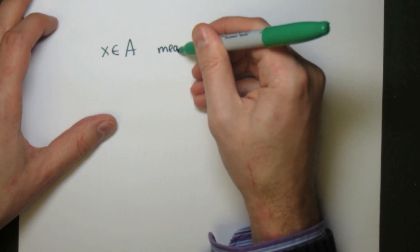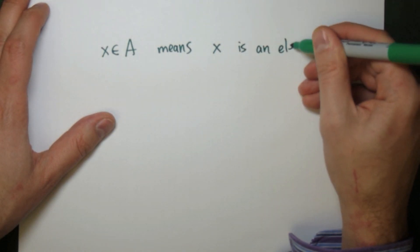We write x is an element of A using the Greek letter epsilon.